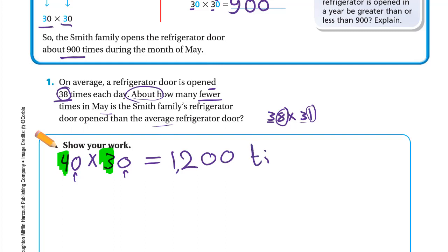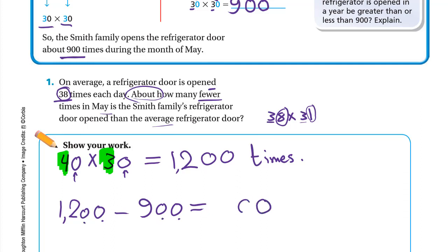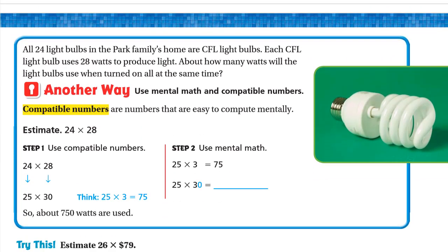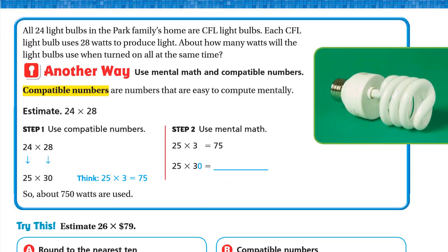Those two zeros appear in the product, so the average is 1200 times. The Smith family opens the door 900 times, so for 'how many fewer' we subtract: 1200 − 900. 0 − 0 is 0, 0 − 0 is 0, 2 − 9 requires borrowing: 12 − 9 is 3. So it's 300 fewer times.